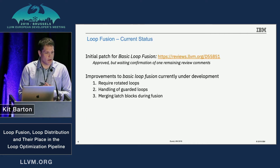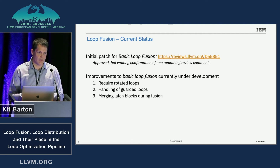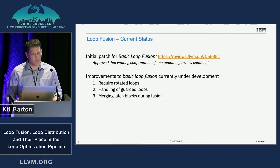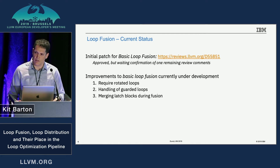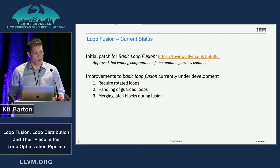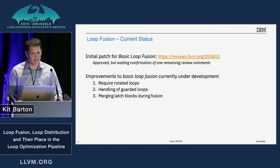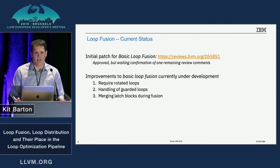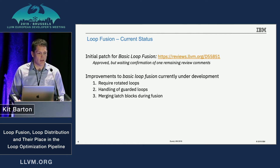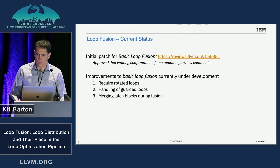Those are the basic requirements. We have transformations to get around all of those requirements and we've implemented parts of those — they're out of tree. The recommendation after the October talk was to strip out everything not absolutely essential to make the patch as small as possible to expedite the review process. What's posted on Phabricator right now is the very basics needed to fuse loops.